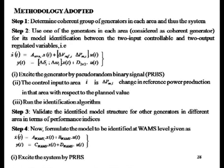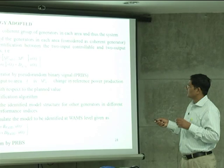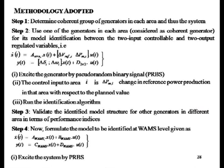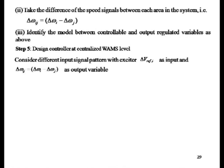We consider the equivalent model as a state space variable form with A matrix, B matrix defining the control input variable form, C matrix for delta rotor angle and speed, and D matrix. For model identification, we excite the systems with perturbations — applying a certain disturbance in the mechanical turbine power. We apply a pseudo-random binary signal to the reference voltage signal and turbine mechanical power as excited variables, then observe the corresponding rotor angle deviations and speed. Then we run the identification algorithm and validate the identified model structure using different performance indices, finally obtaining the WAMS model at the centralized level.